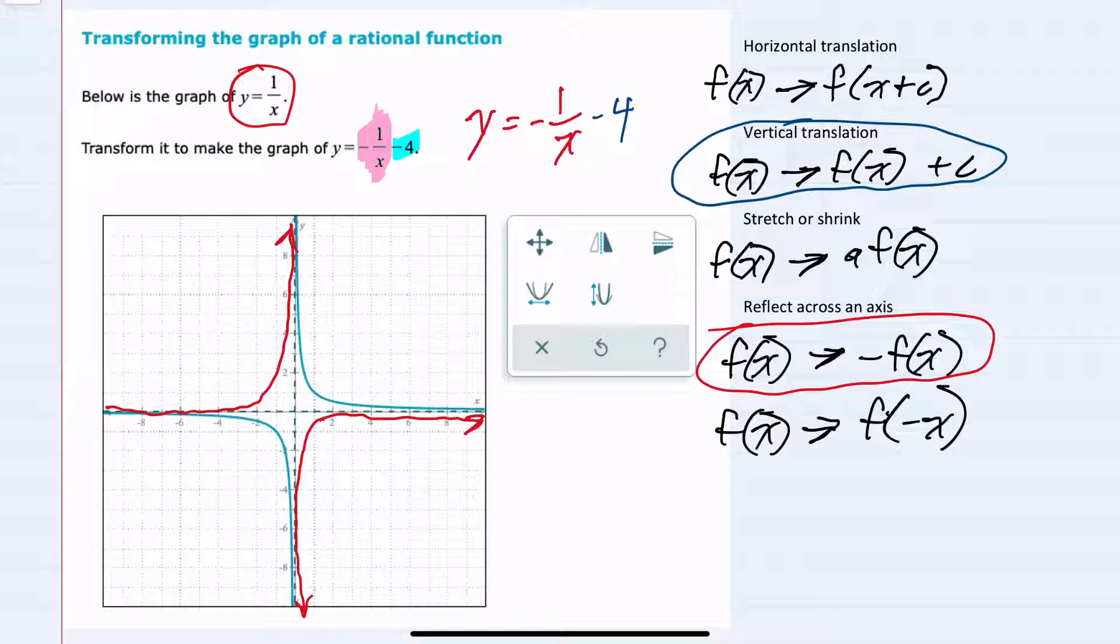Our horizontal asymptote is going to shift down 4. So this part to the right of the vertical asymptote shifts down and the part to the left of the vertical asymptote also shifts down. So our new graph would be like the blue one here where we have had two translations, one reflecting across the axis and another that is a vertical translation.